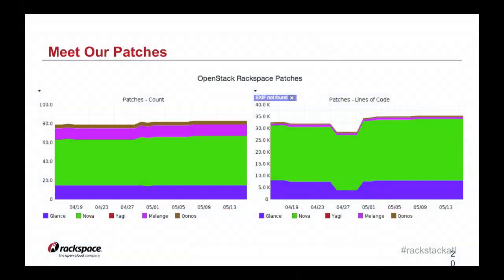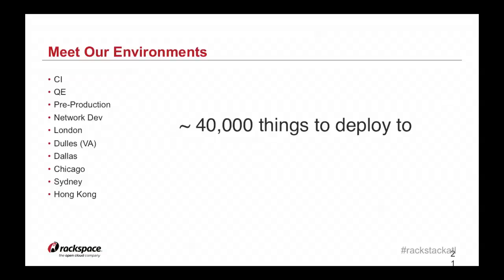Here are our patches — we have about 80 patches. The green one is Nova, with probably over 40 patches. On the right is about 35,000 lines of code. It's a lot to maintain. We have a couple of environments we deploy to — about 40,000 nodes. It's a lot of code, a lot of overhead, and a lot to deploy to. I really want to make this as simple as possible because I'm going crazy.